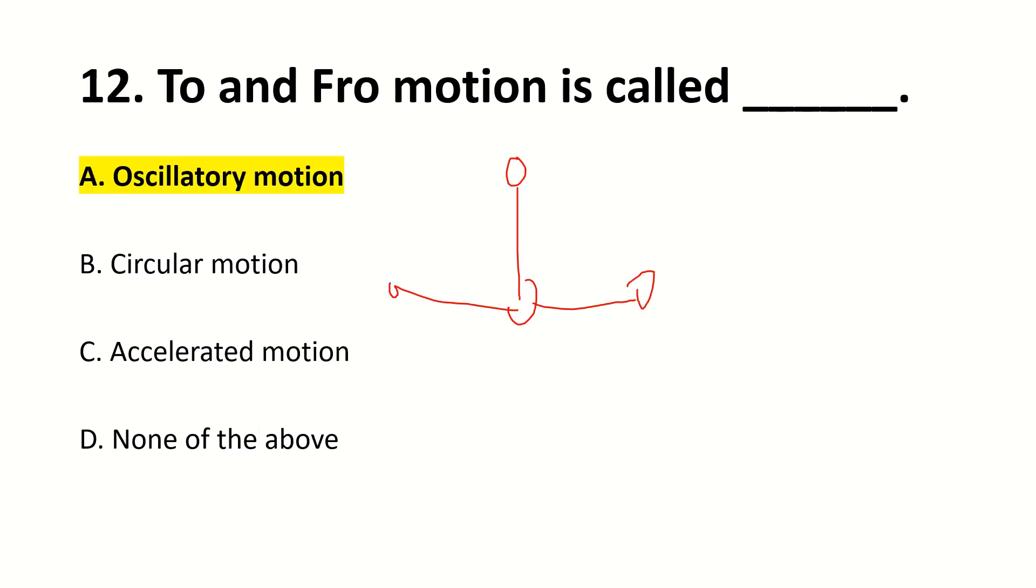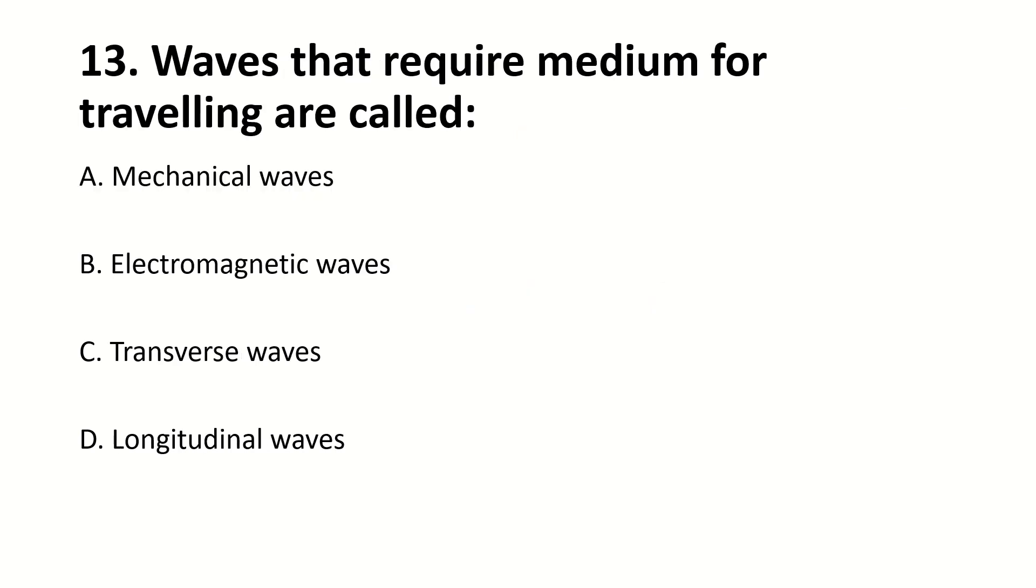Vibratory motion is a simple harmonic motion. Waves that require medium for traveling are dash. The right answer is mechanical waves. This is a mechanical wave: transverse waves, longitudinal waves, sound waves, light.